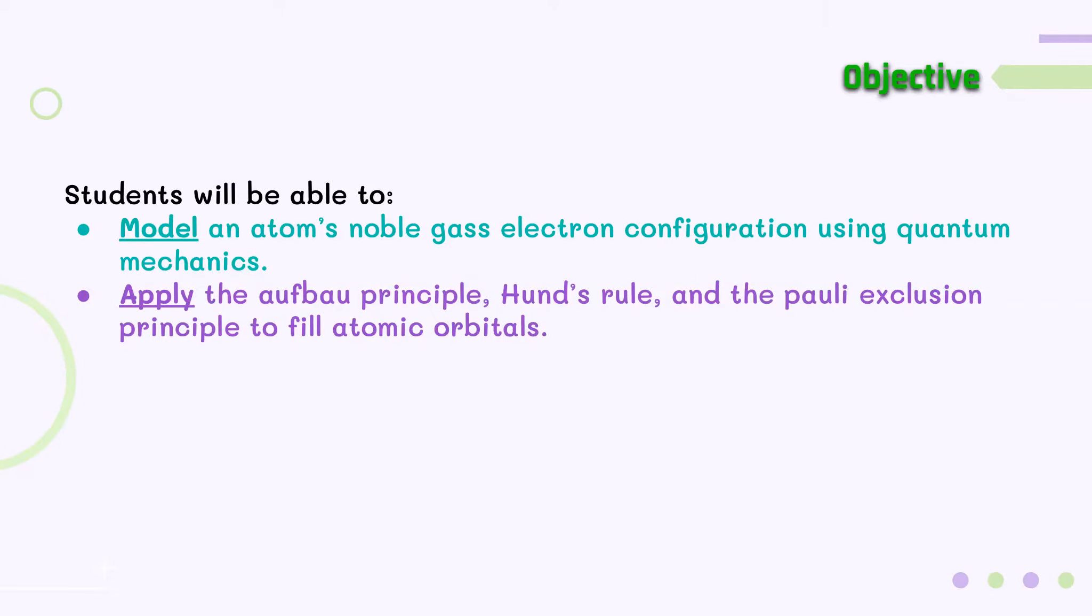In this lesson, students will be able to model an atom's noble gas electron configuration using quantum mechanics and apply the Aufbau principle, Hund's rule, and the Pauli exclusion principle to fill atomic orbitals.